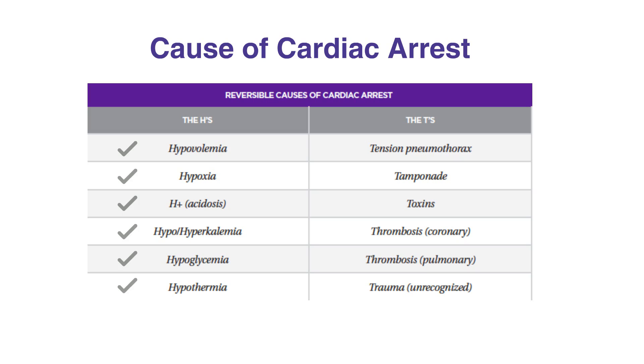The T's include tension pneumothorax, tamponade, toxins, coronary thrombosis, pulmonary thrombosis, and unrecognized trauma.